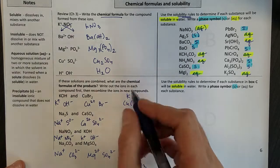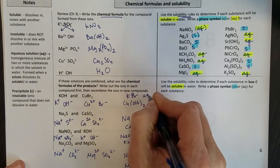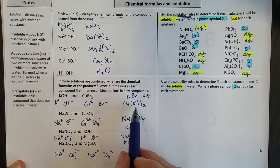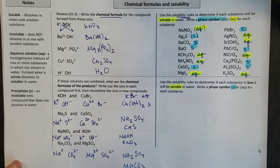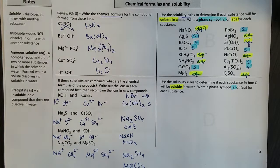So for example, KBr, when I look at my solubility rules, I find out that that would be aqueous. Copper hydroxide, I find out that that would be solid. So go ahead and work on a few of those things. And then we will check your work.